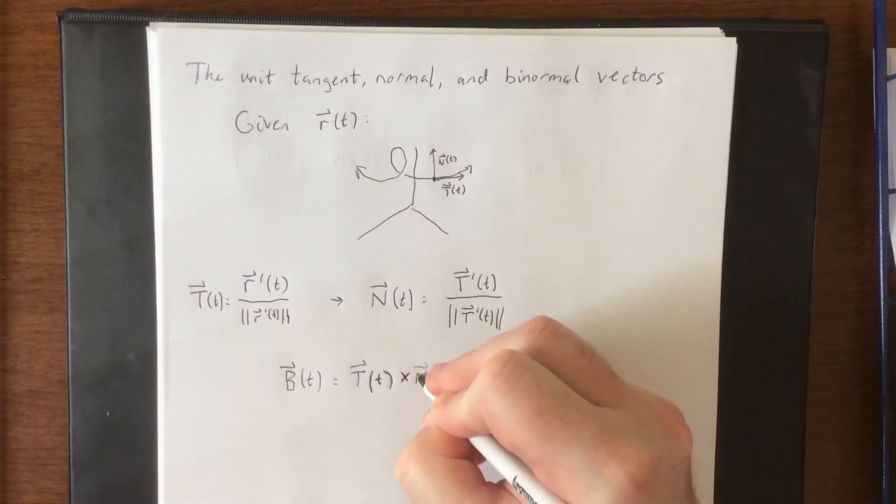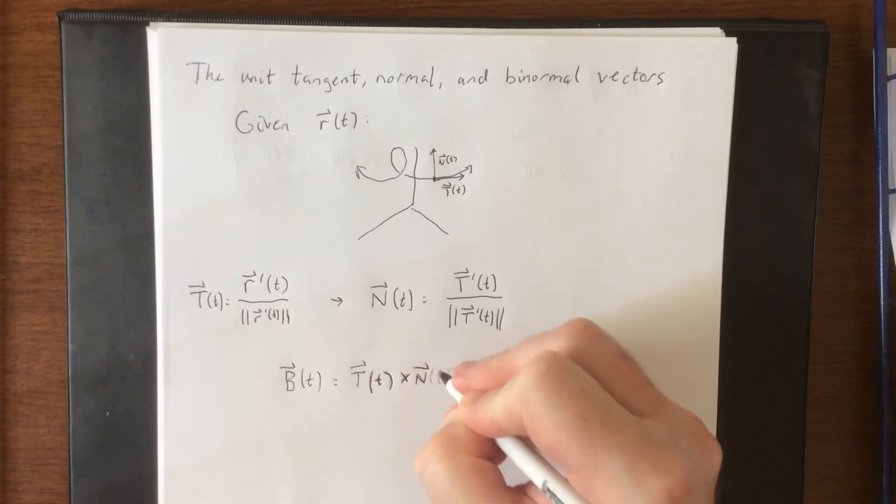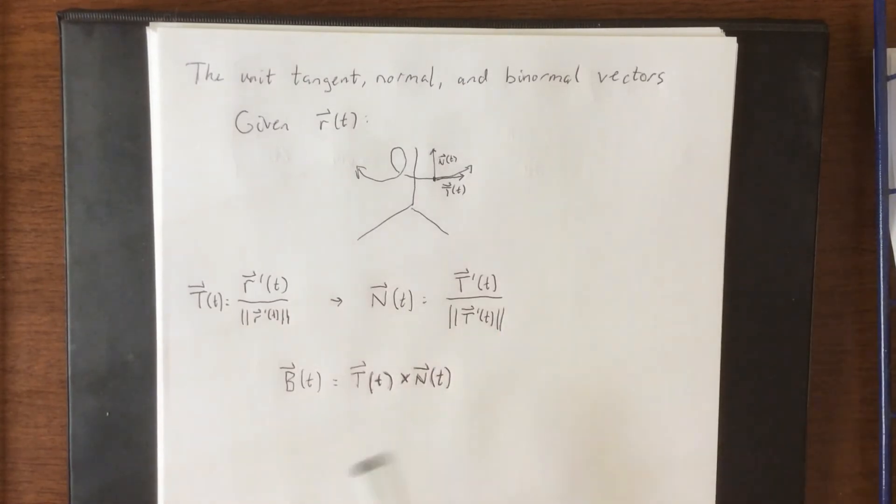So we take the cross product of the unit tangent vector and the unit normal vector in that order, and we get what's referred to as the binormal vector.